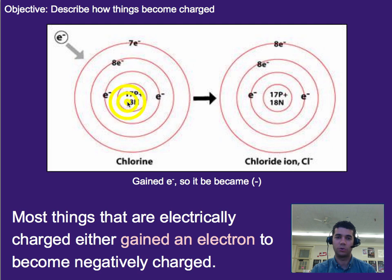It either gained an electron to become negatively charged. So here we have a chlorine atom that has 17 electrons and 17 protons, so it's neutral or zero charge. And in this case, if you add an electron, it would now have one extra electron than there are protons and as a result would have a negative charge and becomes a negative chlorine ion.